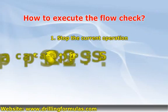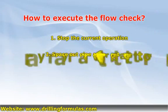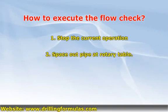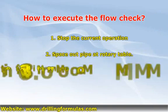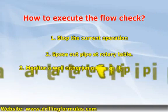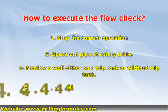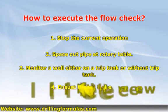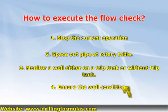Second, space out pipe at the rotary table. We need to do this because if the well is flowing while flow checking, we can immediately shut the well in.